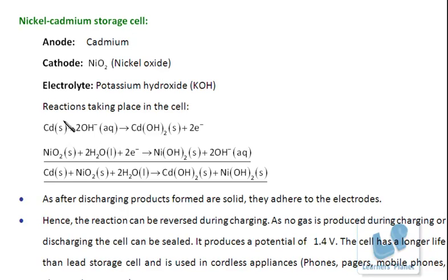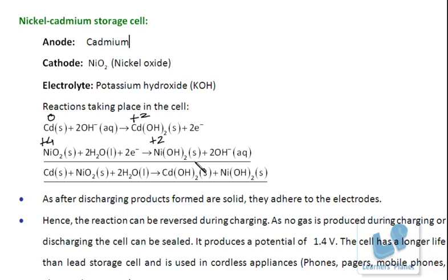It is important to know the oxidation states. The oxidation state of cadmium is zero on the left and +2 on the right — it has lost two electrons. In the case of nickel, it is +4 initially. Nickel oxide combines with water, takes up two electrons, and forms nickel hydroxide, where the oxidation state becomes +2, and hydroxyl ions are formed. The complete reaction is: Cd + NiO₂(s) + H₂O → Cd(OH)₂ + Ni(OH)₂.